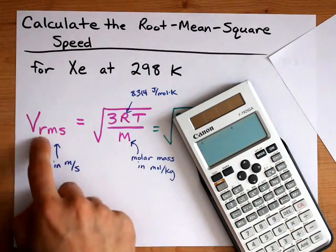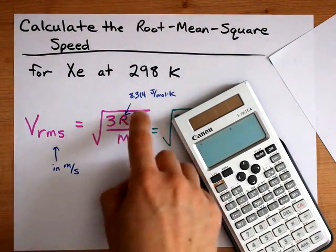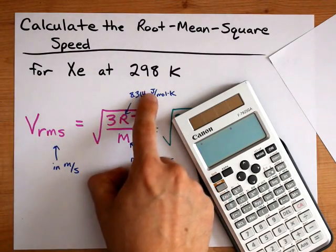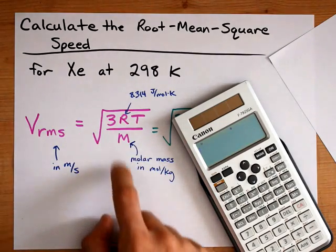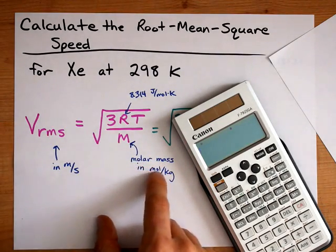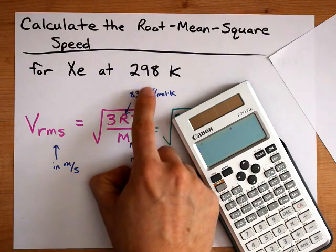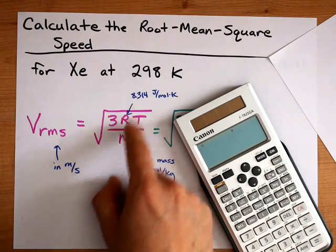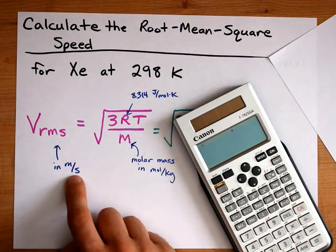Now you can calculate the root mean square speed in meters per second if you use 8.314 for R, because that's in joules per mole Kelvin. You have to use the Kelvin temperature for T, and you need the molar mass in moles per kilogram. The kilogram is needed here to cancel out with kilograms as part of joules, and the square root here helps us convert meters squared over seconds squared into regular meters per second.